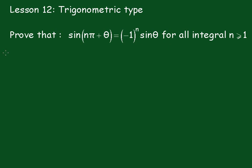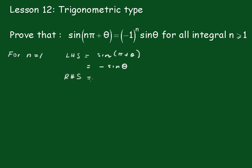For n equals 1, the left hand side equals the sine of pi plus theta. The sine of pi plus theta is minus sine theta because we're in the third quadrant. The right hand side is equal to minus 1 times sine theta, which obviously equals the left hand side. So this statement is true for n equals 1.